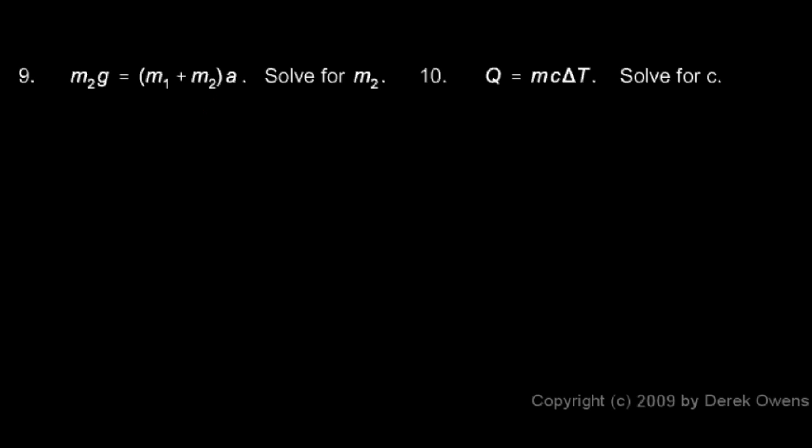I can still do this though, and here's how. I'm going to start by distributing the a on the right, so I have m₂g equals m₁a plus m₂a. Now I'm going to rearrange this algebraically so that all my m₂ terms are on one side.